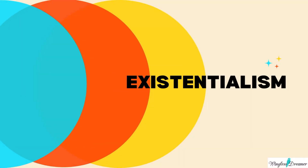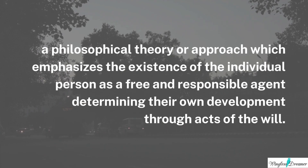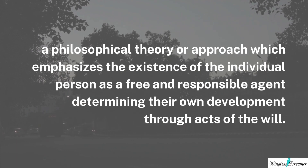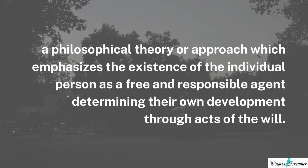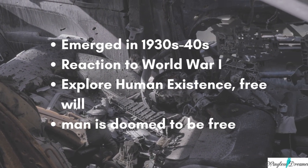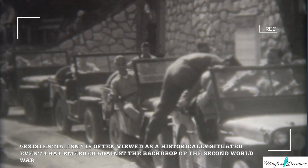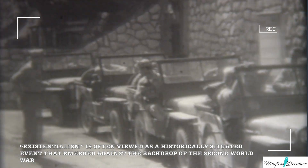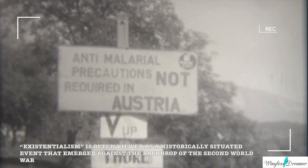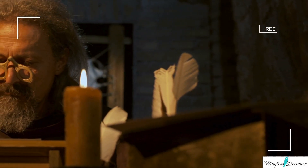The first: Existentialism. It is defined by the Oxford Dictionary as a philosophical theory or approach which emphasizes the existence of the individual person as a free and responsible agent determining their own development through acts of the will. Existentialism emerged as a prominent philosophical school of thought in the 1930s and 1940s in the face of the world wars. The philosophers belonging to this school explored the question of the value of human existence and the complete freedom of will that they believed humans had, which, according to them, led to an anxiety of existence in a lawless world.